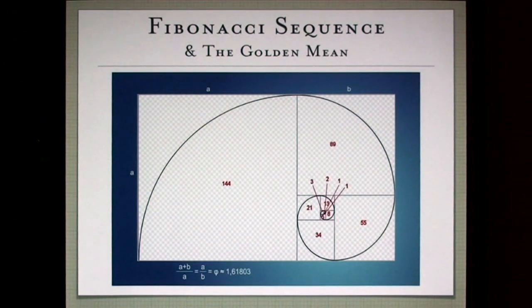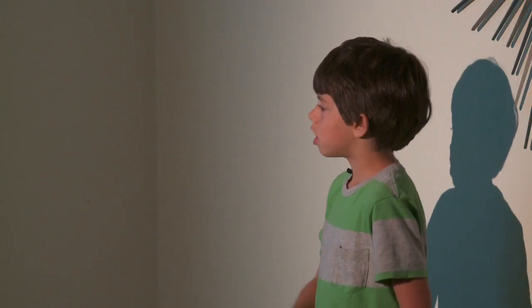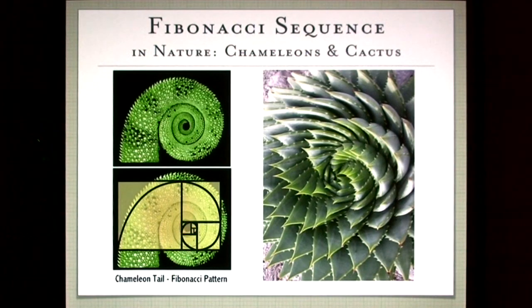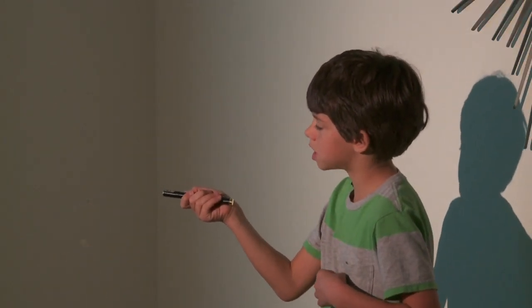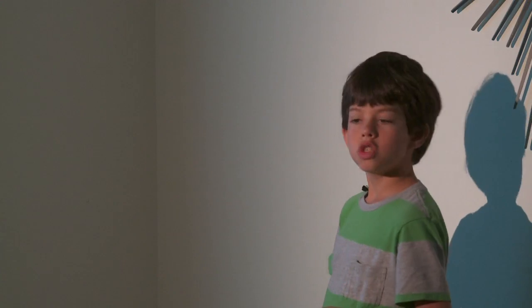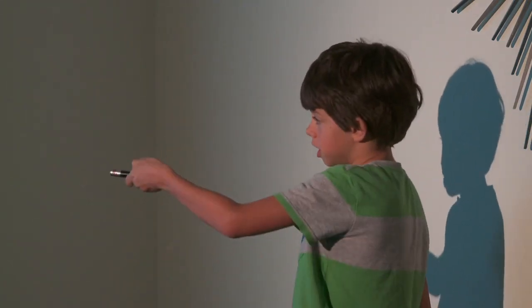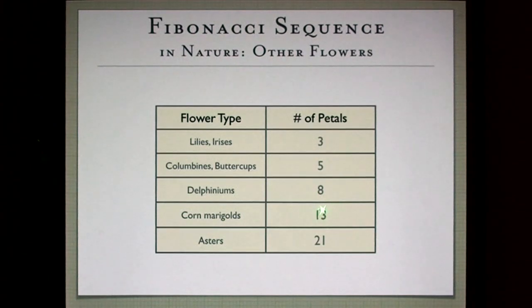The golden mean can also appear in nature, such as in a shell. It also appears in chameleon tails and certain cacti. It appears in a sunflower because it has 34 spirals, which is a Fibonacci number. It also appears in different flower types: certain lilies and irises have three petals, columbines and buttercups have five petals, delphiniums have eight petals, corn marigolds have 13 petals, and asters have 21 petals.